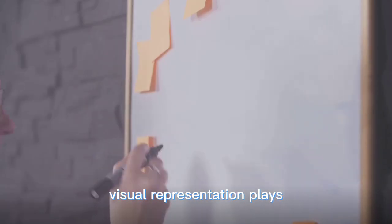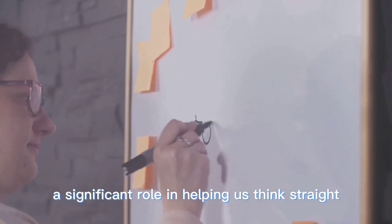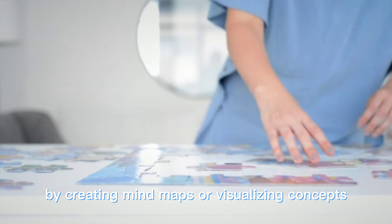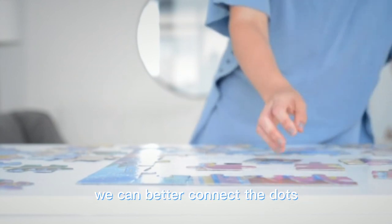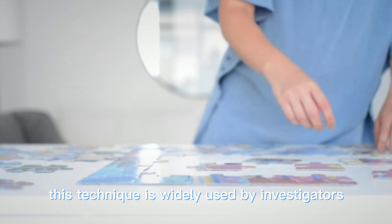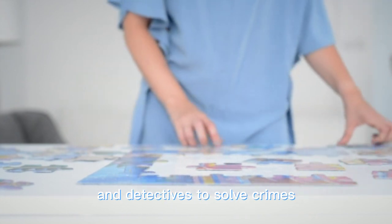Visual thinking. Visual representation plays a significant role in helping us think straight. By creating mind maps or visualizing concepts, we can better connect the dots and understand complex ideas. This technique is widely used by investigators and detectives to solve crimes.